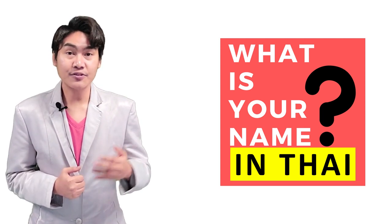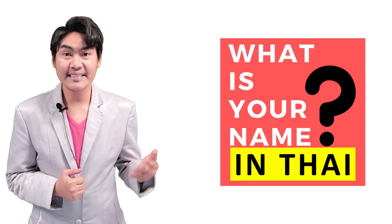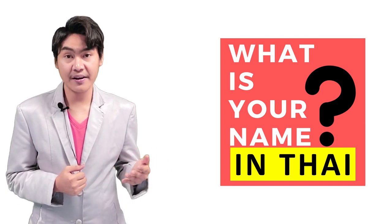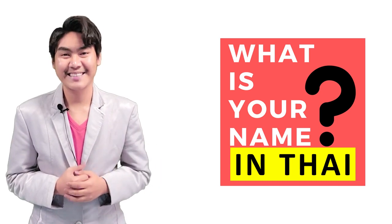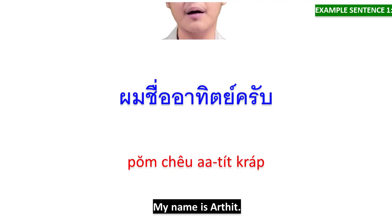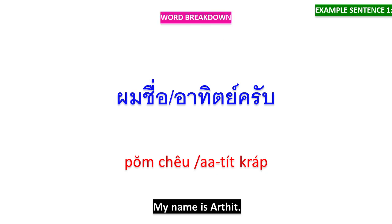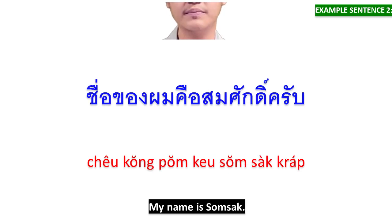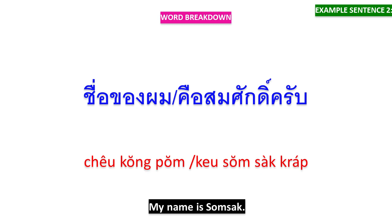Now you are going to learn about how to respond to this question like a native speaker. Firstly, if you are male speakers, you can respond like this: ผมชื่ออาทิตย์ครับ — ผมชื่อ means 'my name'. ชื่อของผมคือสมศักดิ์ครับ — ชื่อของผม means 'my name', คือ means 'is'. ครับ is a particle used to show the politeness of male speakers.